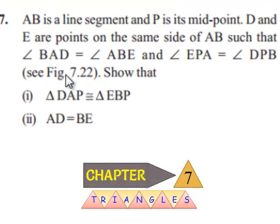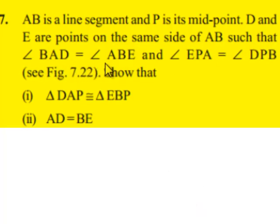Moving on to the 7th question. AB is a line segment and P is its midpoint. D and E are points on the same side of AB such that angle BAD equals angle ABE, and angle EPA equals angle DPB. Show that in the first case, triangle DAP is congruent to triangle EBP, and AD is equal to BE.